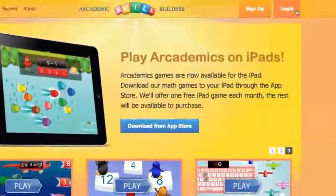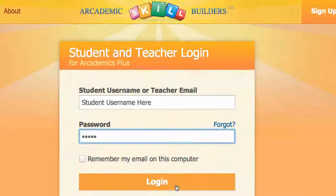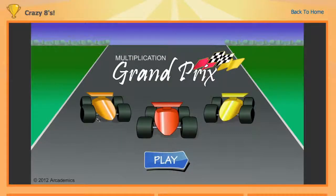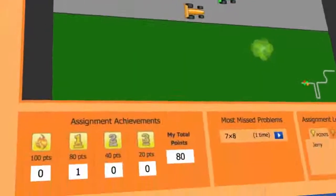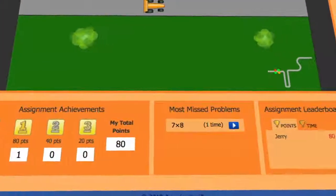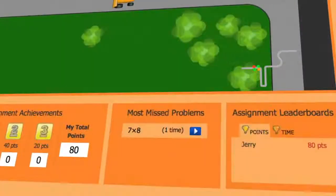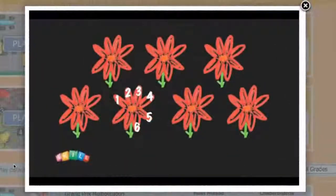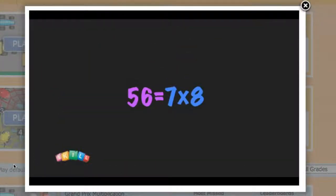Students log in at the login screen with the usernames and passwords you gave them. Then they'll see the games you assigned them. They select a game to play and earn achievement points based on their performance. The games will keep track of the students' most missed problems. Students can then click the play button to view a lesson video that models different solutions to these problems and then practice these problems in the game.